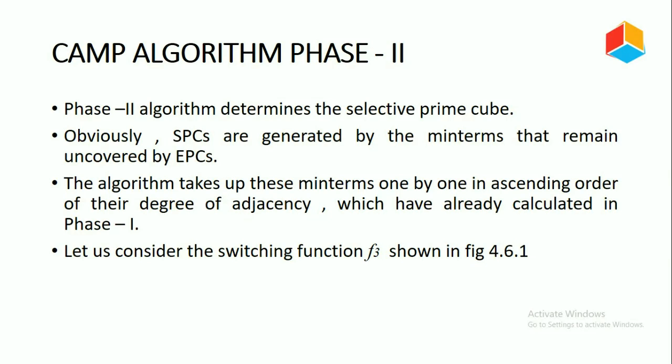In Phase 1, I explained about the CAMP algorithm — how the candidate solution cube will be generated, and from that how we can generate the essential prime cubes. So in the Phase 2 algorithm, we determine the selective prime cube. The selective prime cubes are generated by the minterms that remain uncovered by the essential prime cubes. The algorithm takes up these minterms one by one in ascending order of their degree of adjacency, which was already calculated in Phase 1.